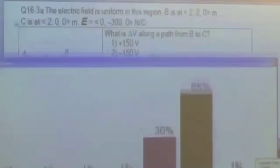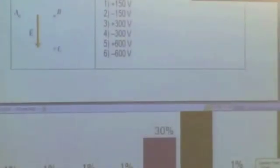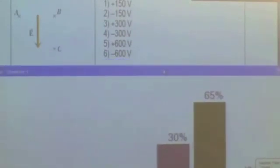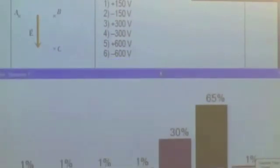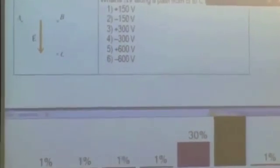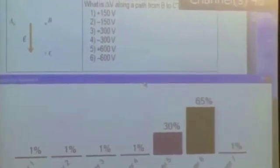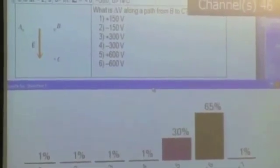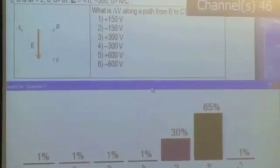So 65% says positive something and 30% say negative something. Signs are going to be really important here. And we'll say a little bit more about this as we go along, but it's really important to get the signs correct. And so let's work out what the path should be and what the sign should be.